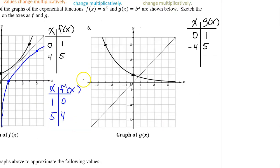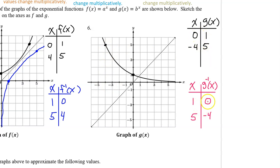There it is! For number 6, to graph g inverse, identify key points on g: (0, 1) and (−4, 5). Switching inputs and outputs, two points on g inverse are (1, 0) and (5, −4). The inverse of an exponential function is a logarithmic function, so instead of the x-axis acting as an asymptote, now it's the y-axis. Draw a curve through these two points that approaches the y-axis asymptotically. G inverse will look something like this.